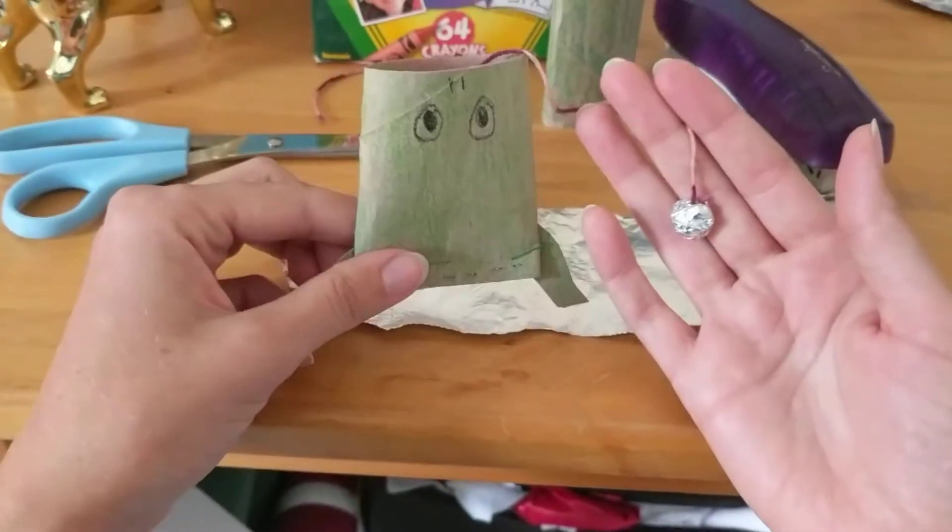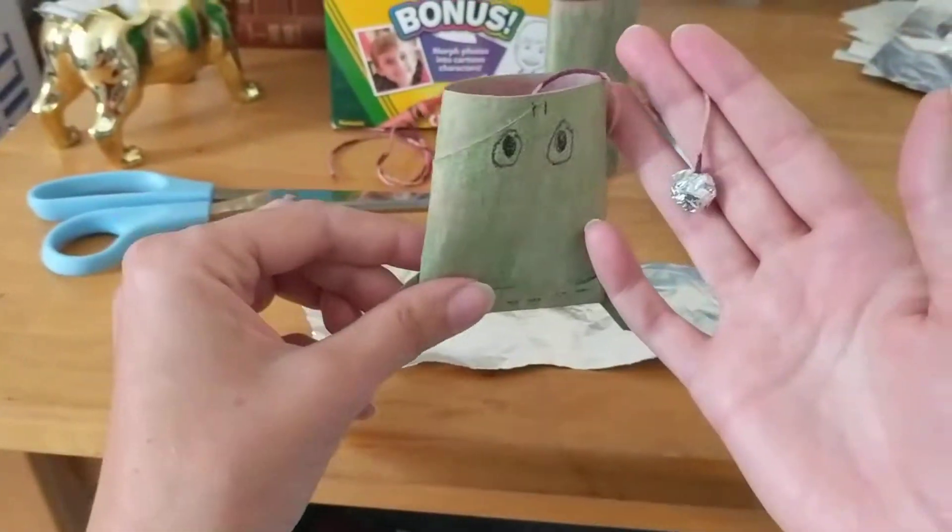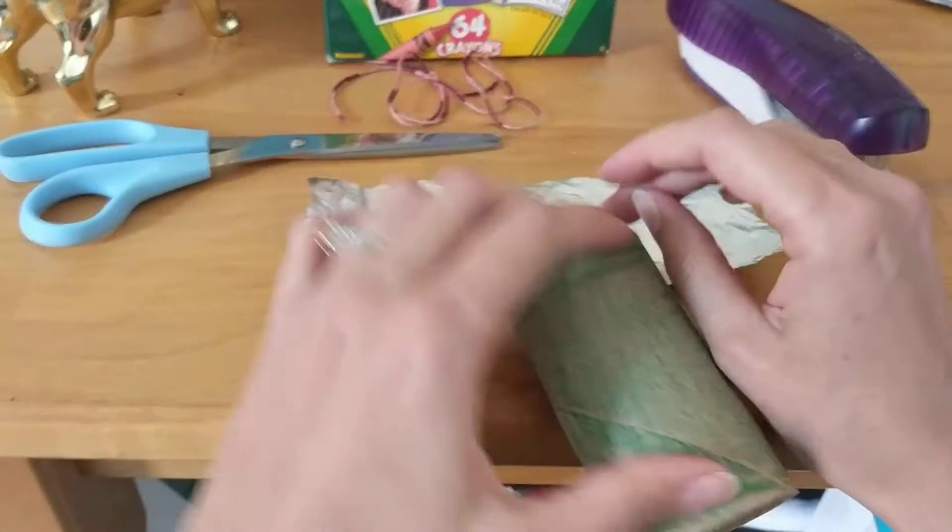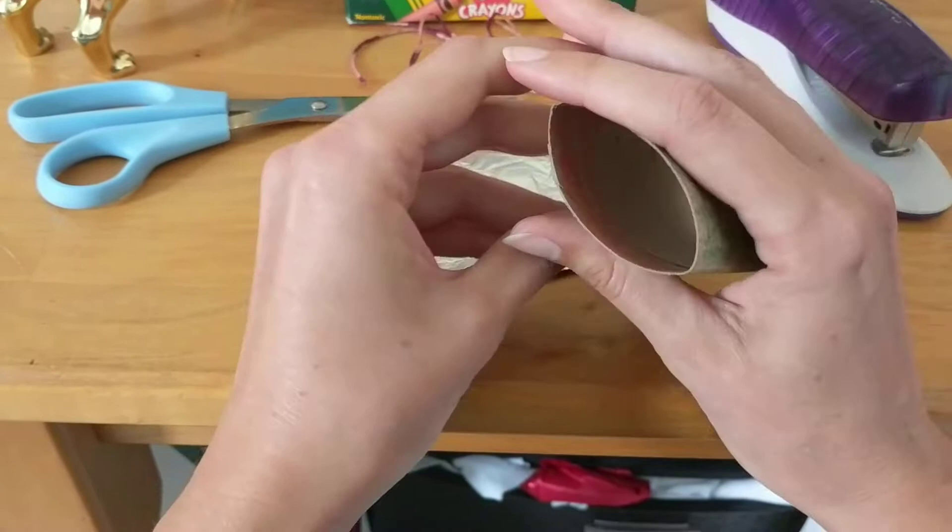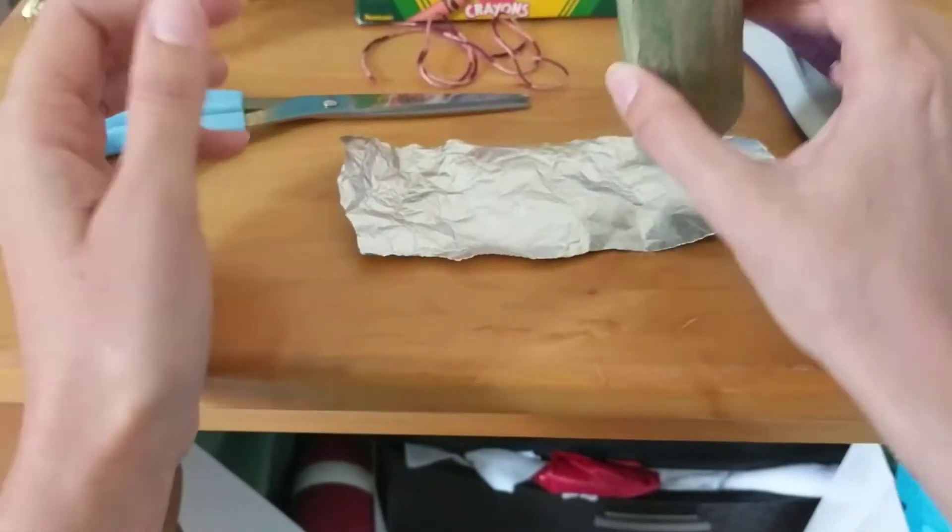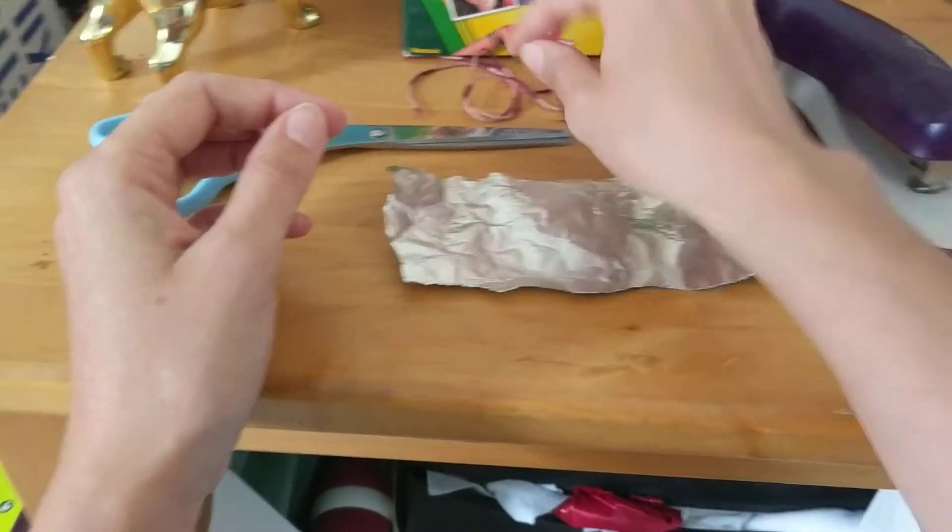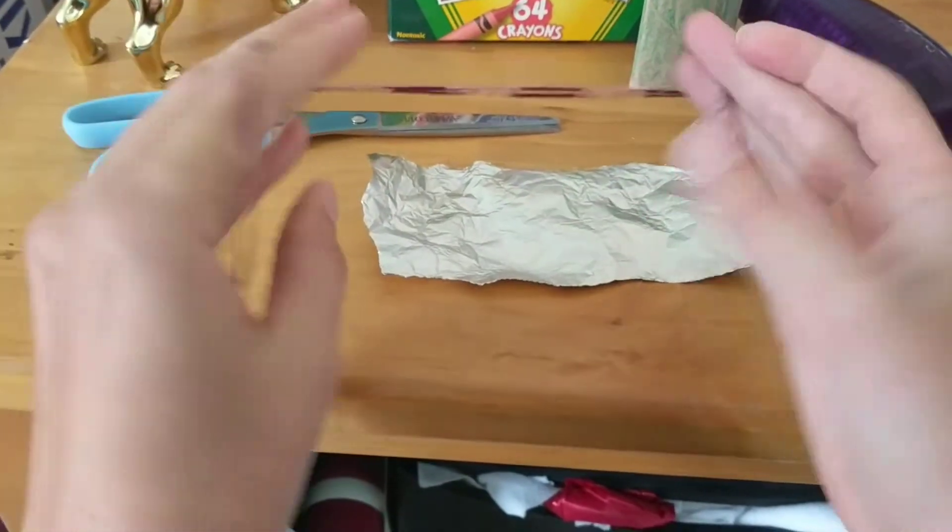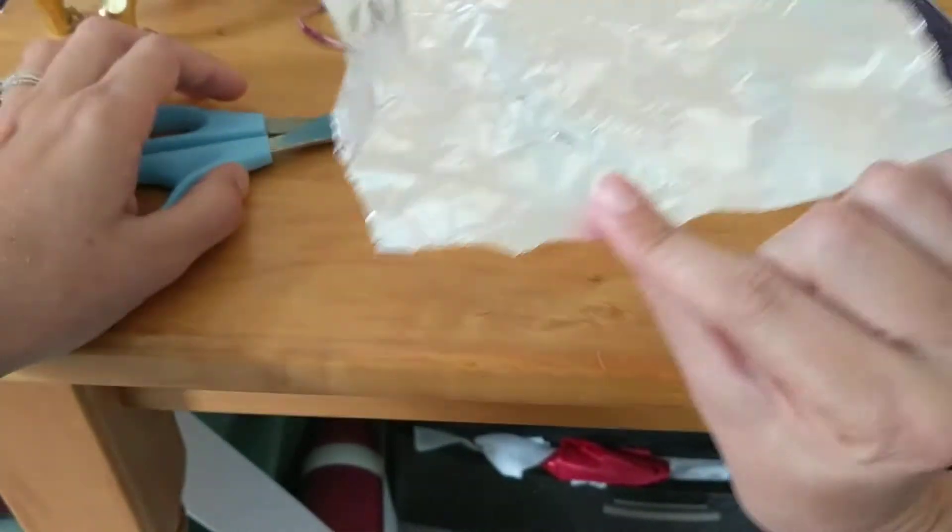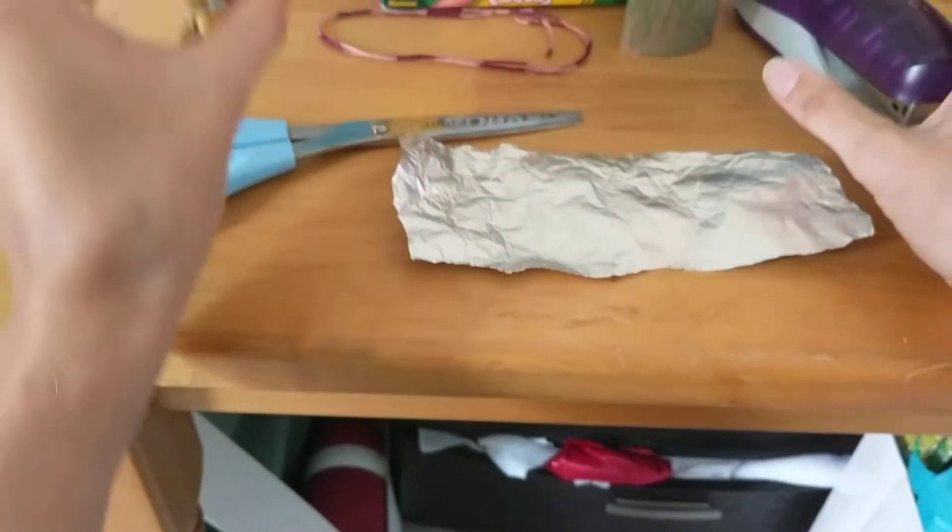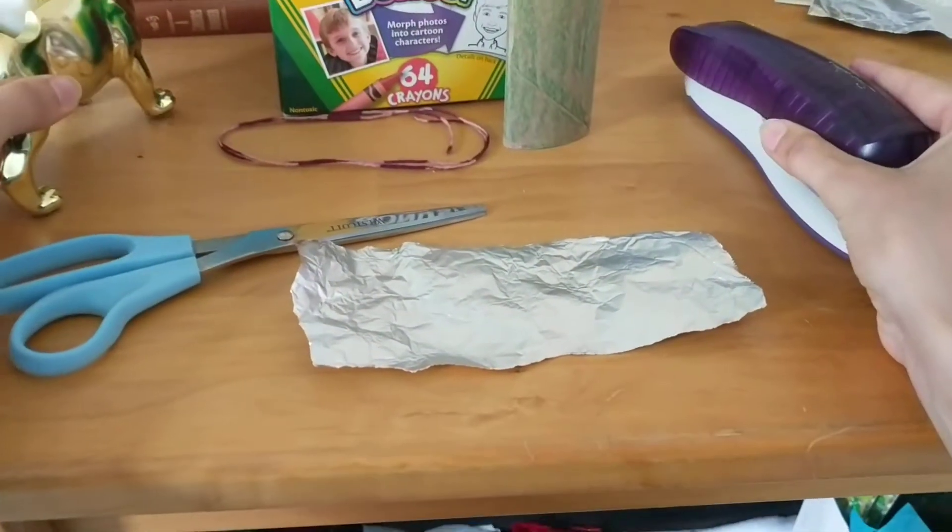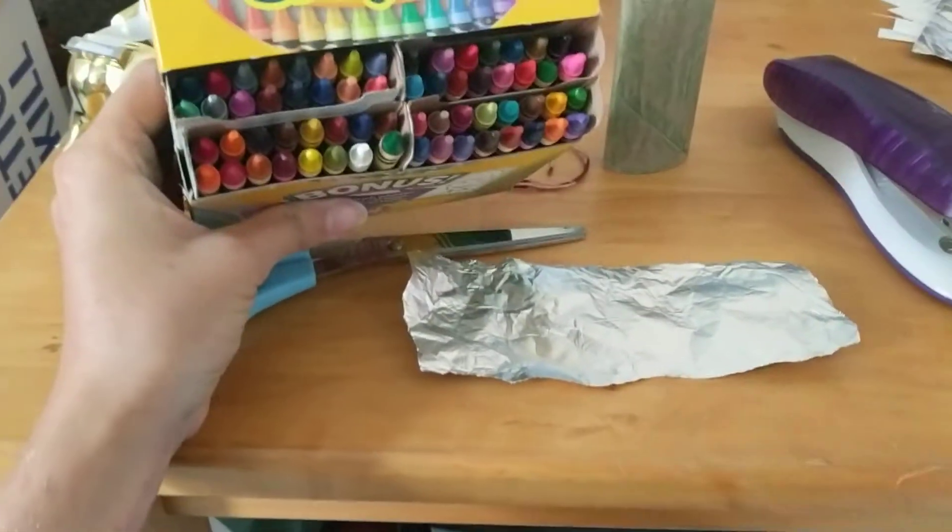Here we go. So in order to make this frog you're going to need a couple of things. You're going to need a paper towel tube or a toilet paper tube cut to this size. I already colored mine in so you're not watching me color for hours. You will need string or floss like we mentioned in the last video. You'll need scissors, some tin foil, tape or stapler and I'll show you how to use both, and you'll need crayons.